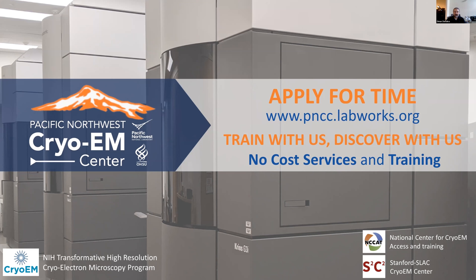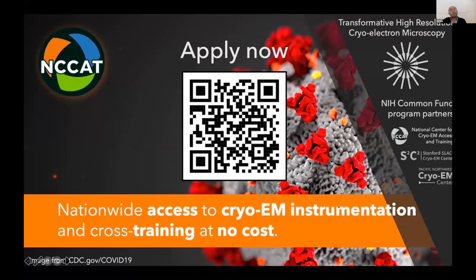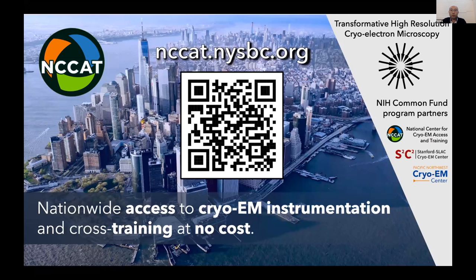Hi, my name is Ed. I'm the manager of NCCAT. Looking at the year, something we are all thankful for is you, the user, for allowing us to help accelerate your cryo-EM research. All three national centers rolled out COVID-19 research access during the start of the pandemic. At NCCAT, we have 20 COVID-19 related proposals and have served 15 of them, producing good research in preprints and publications. We provide not only instrumentation access but cross-training. You can find out more at nccat.nysbc.org.